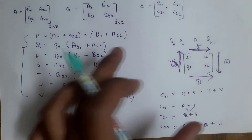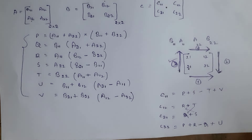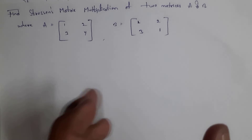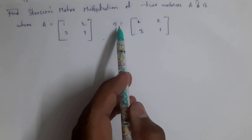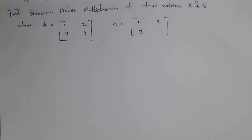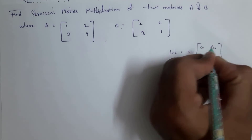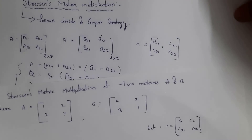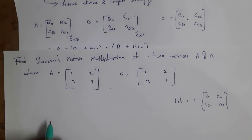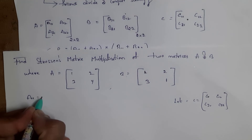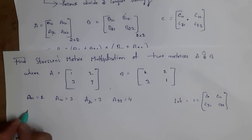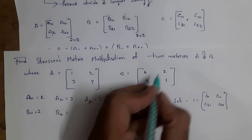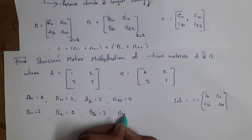Now I will provide one example so you can clearly understand how to solve this problem. In the exam you will get a question like: find Strassen's matrix multiplication of two matrices A and B. We need to find matrix C. From matrix A: a11 = 1, a12 = 2, a21 = 3, a22 = 4. From matrix B: b11 = 2, b12 = 2, b21 = 3, b22 = 1.